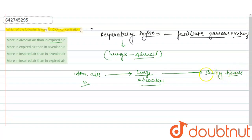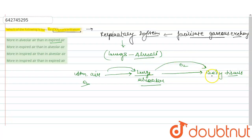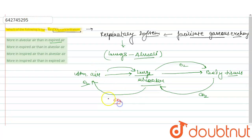The oxygen movement goes through this channel: from the atmosphere, it is taken into the lungs or alveoli, and then from the lungs, O2 is transported towards the body tissues. CO2 transport moves in the opposite direction — CO2 moves from the body tissues towards the lungs, and from the lungs it is eliminated from the body and reaches out into the atmospheric air.